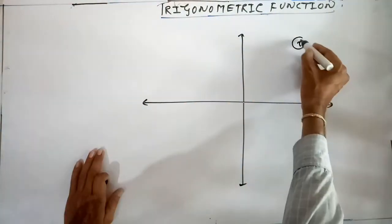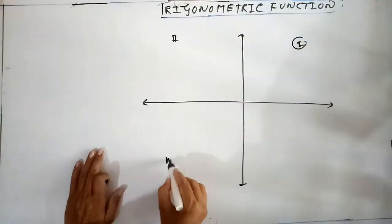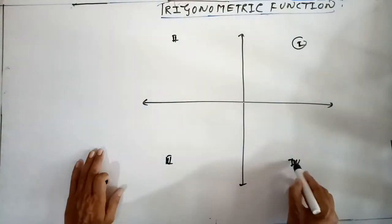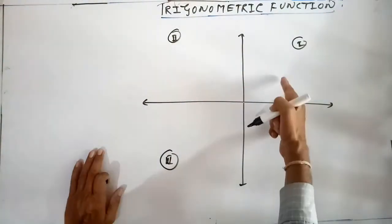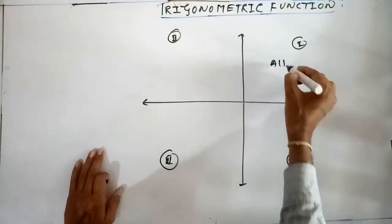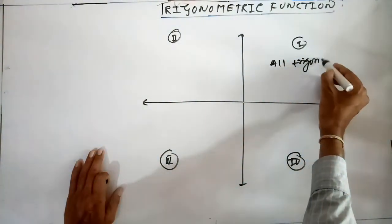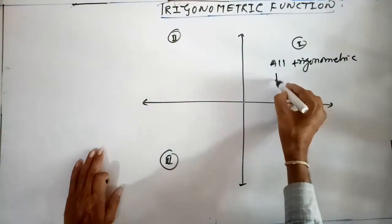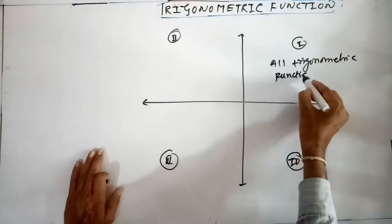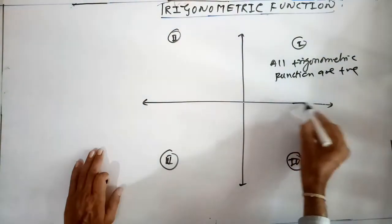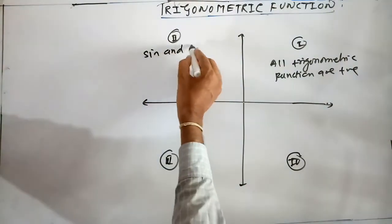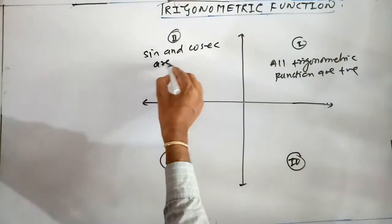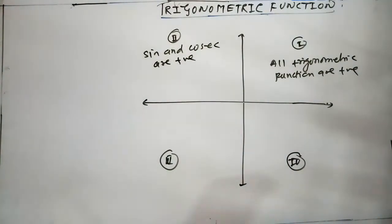This is your first quadrant, second quadrant, third quadrant, and fourth quadrant. In the first quadrant, all trigonometric functions are positive. Whereas in the second quadrant, sine and its reciprocal cosec are positive and the remaining functions are negative.